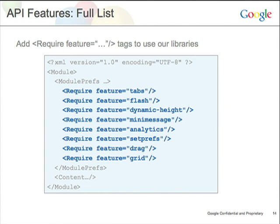Adding new features to your gadget — using one of those specific API libraries — is as simple as adding a require feature equals library name tag. Here's a quick snapshot of what that might look like.